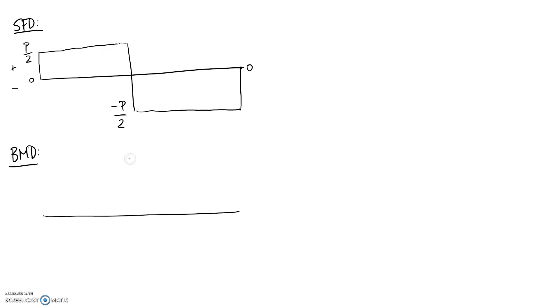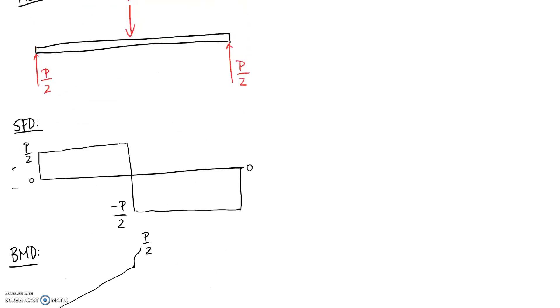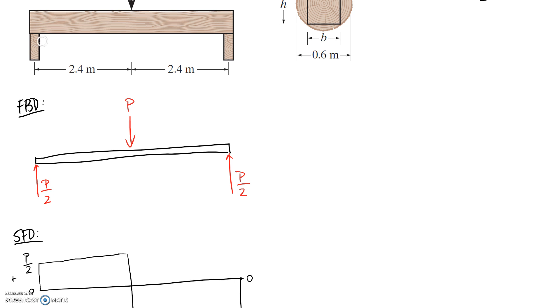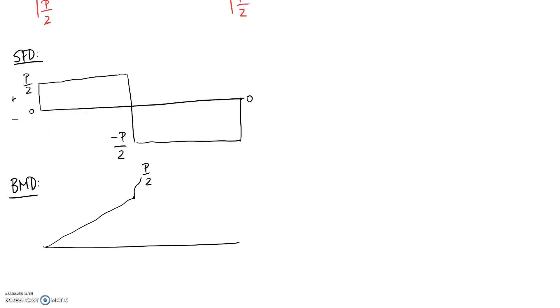Because it's flat here, we should see a diagonal line on the next diagram, so it should look something like this. And we can find the maximum value - it's equal to the total area in here. So that's going to be P on 2 for the height of the rectangle multiplying by the width of the rectangle, which corresponds to this distance in here of 2.4 meters. So we get a maximum value of 1.2P.